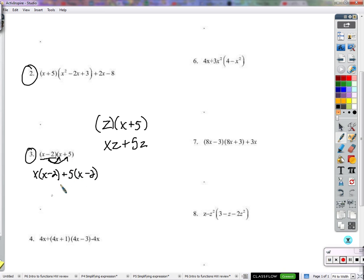And now to complete this whole process, we would have to distribute it again. So x times x is x squared. x times negative 2 is negative 2x. Plus 5 times x is 5x, and 5 times negative 2 is negative 10.